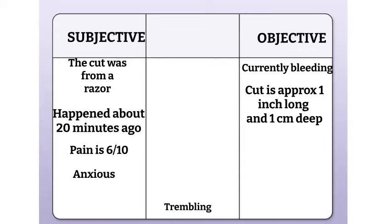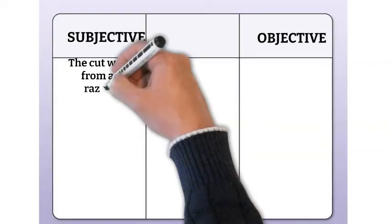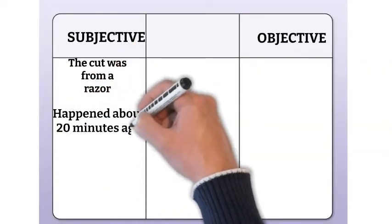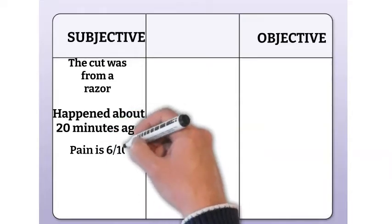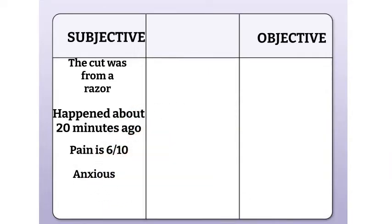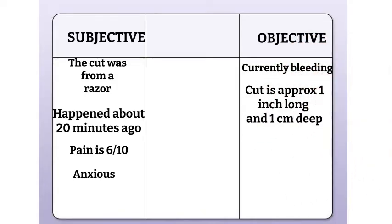Lastly, the patient is trembling. He may be trembling because he's anxious, but we can see the trembling — we can actually see him tremoring and shaking. Therefore, this goes under objective. So this is how the information breaks down from this scenario. Under subjective: the cut was from a razor, it happened 20 minutes ago, pain is a 6 out of 10, and the patient is feeling anxious — all of these require the patient's input. Under objective: the patient is currently bleeding, he has a cut approximately 1 inch long and 1 centimeter deep, and he is visibly trembling.